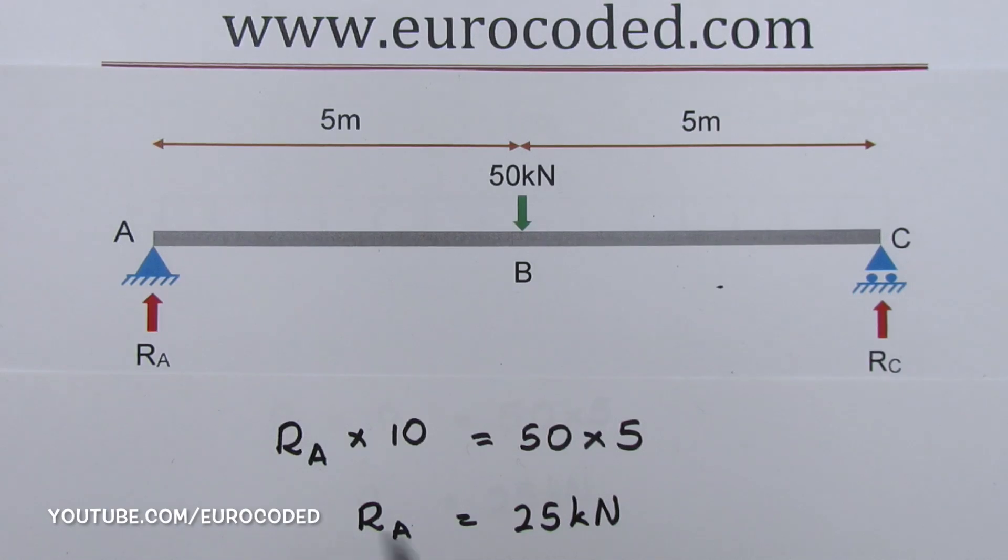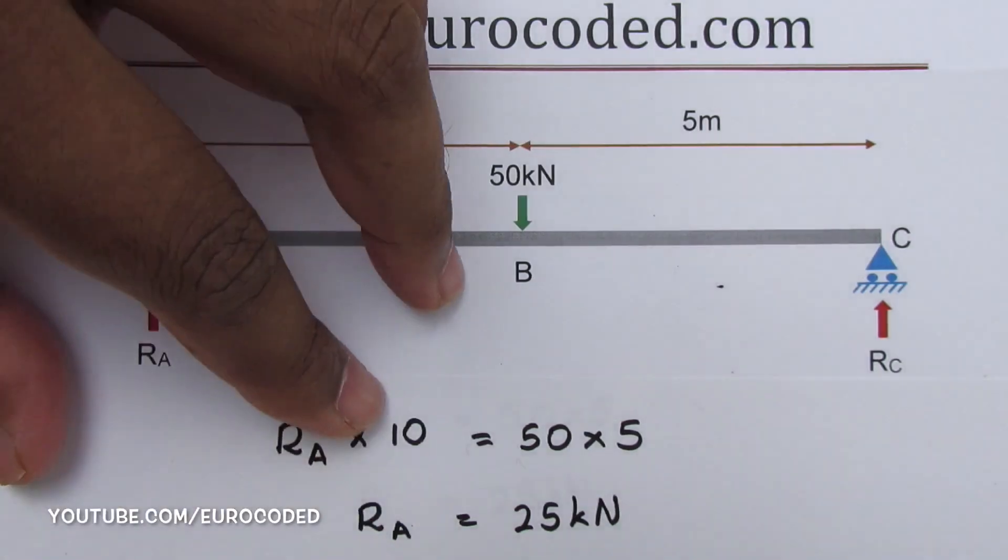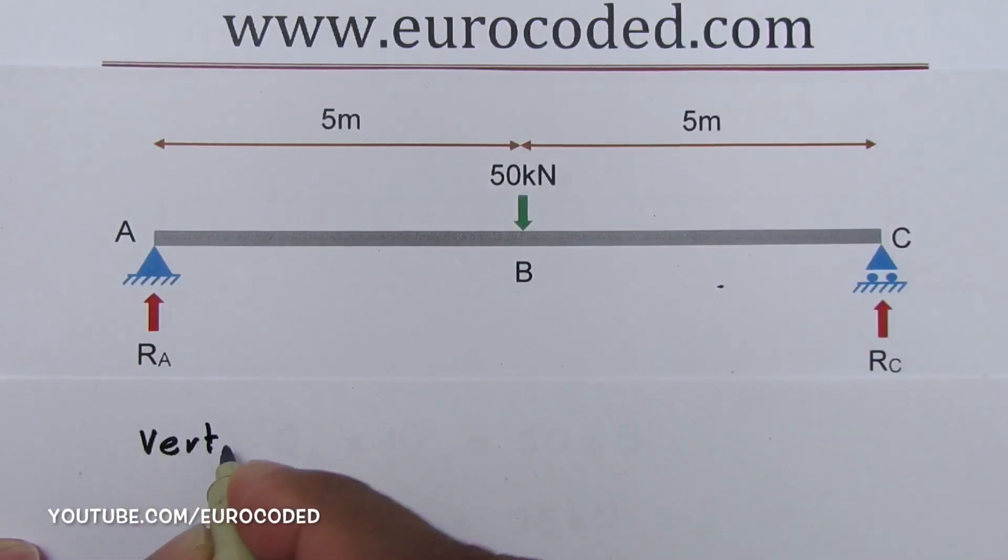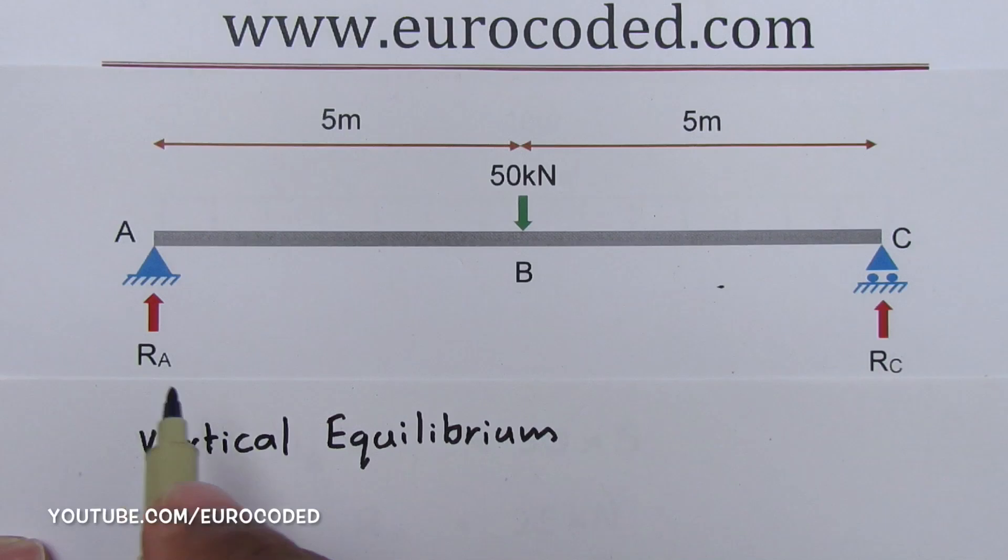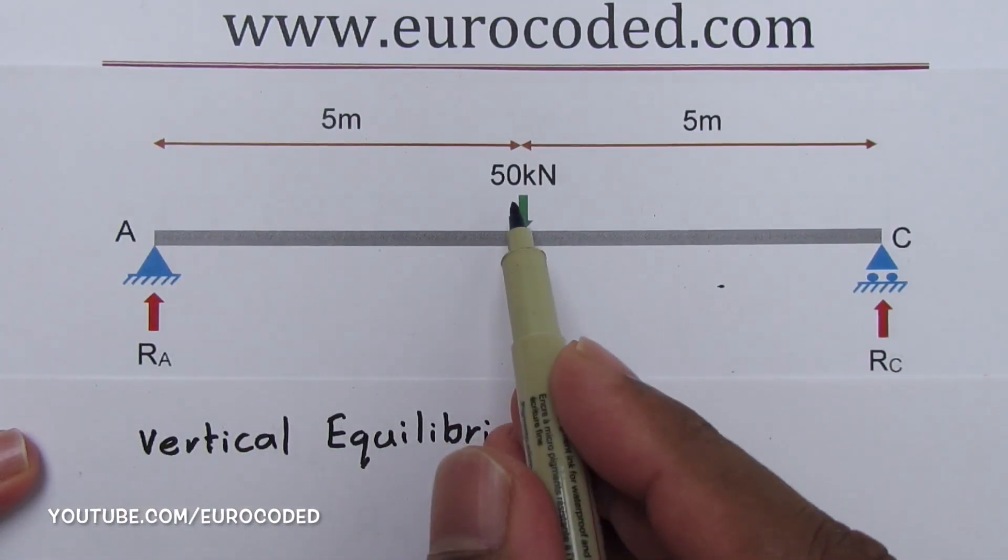Now we can check vertical equilibrium just to make sure that the results we derived are correct. For vertical equilibrium, RA plus RC should be equal to 50.